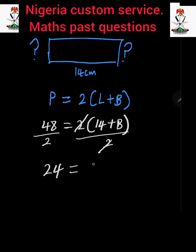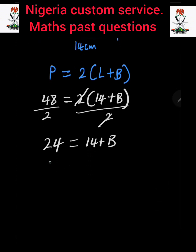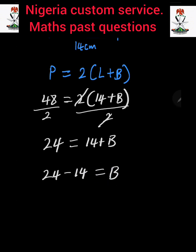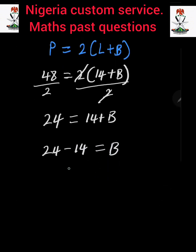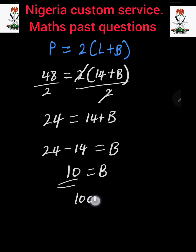So 24 equals 14 plus b. Now we take 14 to the left-hand side, where it becomes negative: 24 minus 14 equals b. 24 minus 14 gives us 10. Therefore, the value for breadth is 10 cm.